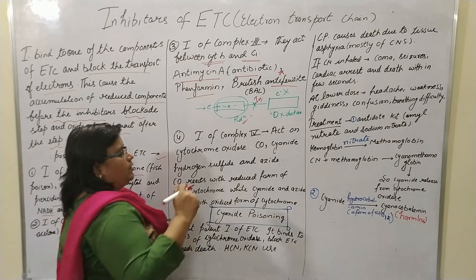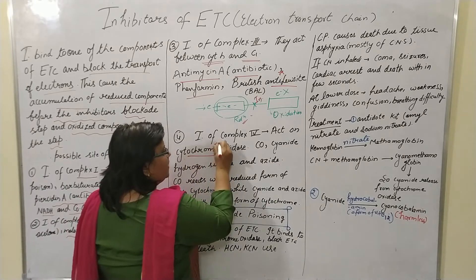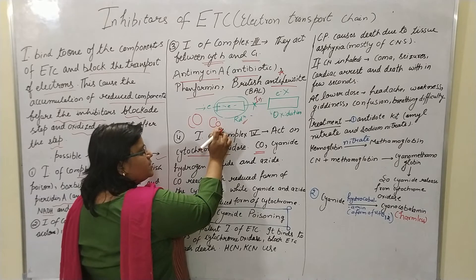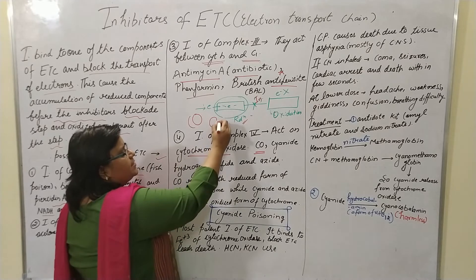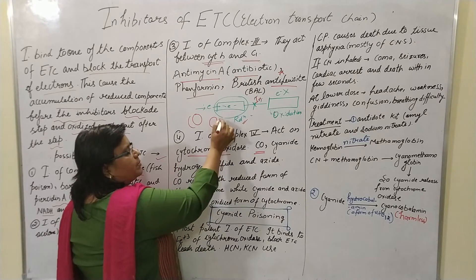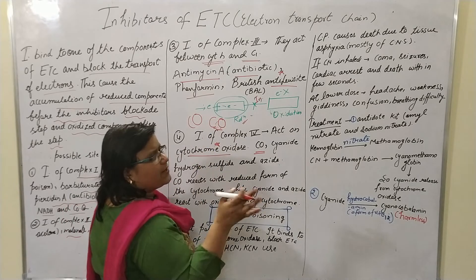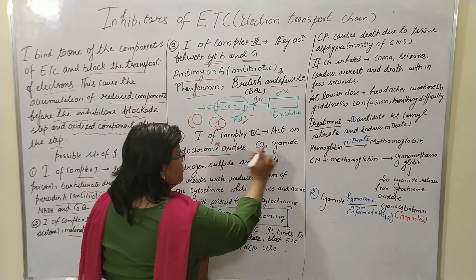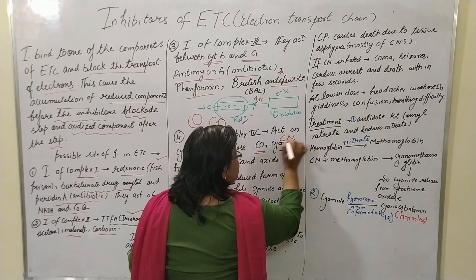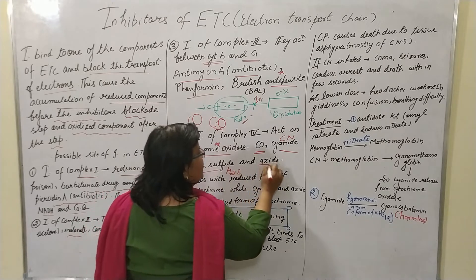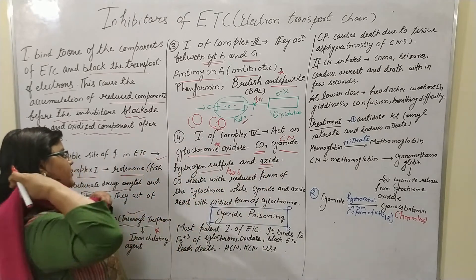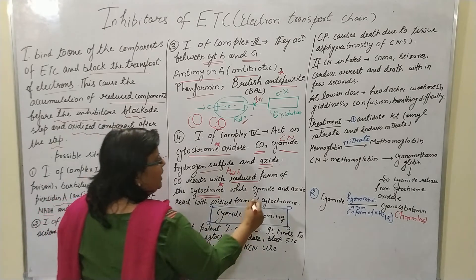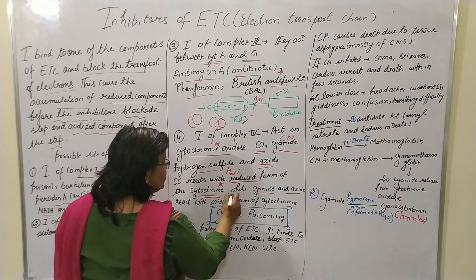The inhibitors of complex 4 act on cytochrome oxidase. These include carbon monoxide (CO), cyanide (CN⁻), hydrogen sulfide (H₂S), and azide. Note that CO is written with both letters capitalized; if oxygen is written in lowercase, it represents cobalt. Carbon monoxide reacts with the reduced form of cytochrome, while cyanide and azide react with the oxidized form.